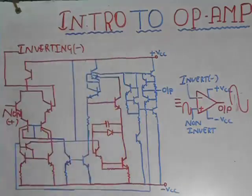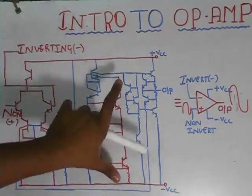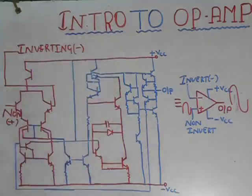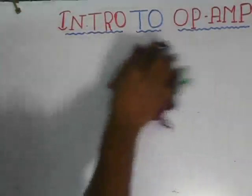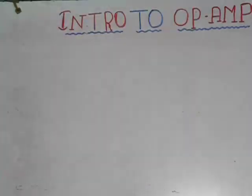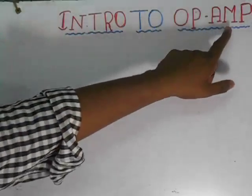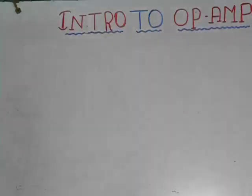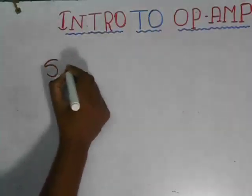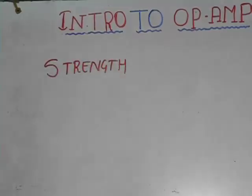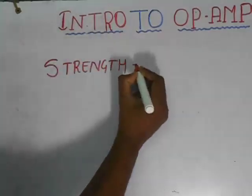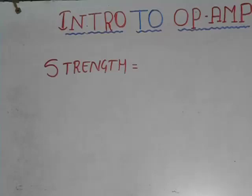Don't worry — in my future class I'm going to explain very clearly about the internal blocks and their functioning. Now, before understanding what is an op-amp, you should get a clear idea about an amplifier. An amplifier is a simple electronic device which increases the strength of the signal. The strength of the signal is nothing but the power gain of that signal.